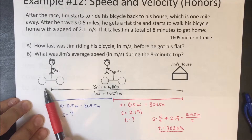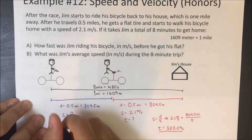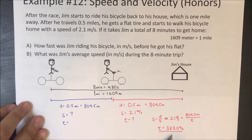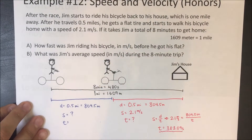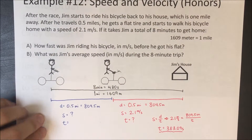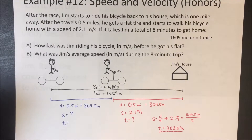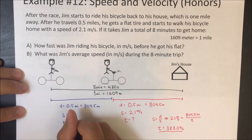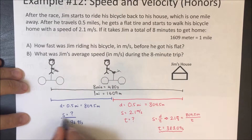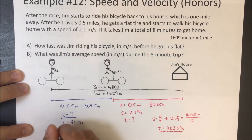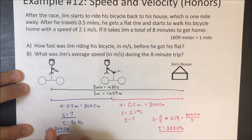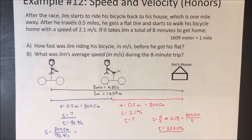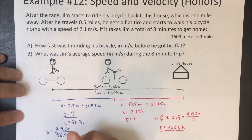The whole ride took 480 seconds, so we can find how long he was riding before the flat: 480 minus 383.09 equals 96.91 seconds. Now we can find his cycling speed: speed equals distance over time, so 804.5 meters divided by 96.91 seconds gives us 8.3 meters per second — his bicycle speed before the flat tire.